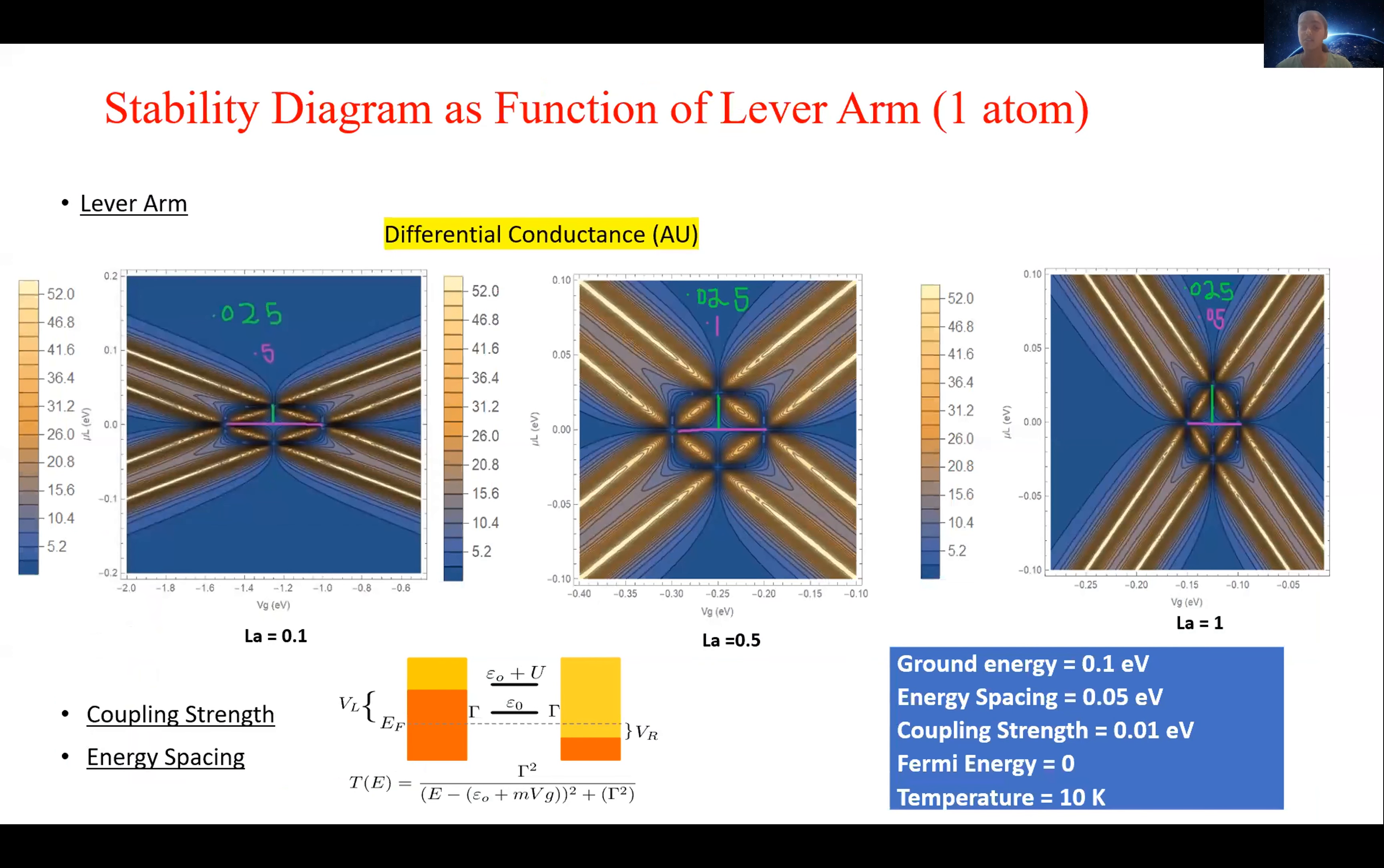So to investigate the one atom system, we observe this differential conductance profile as a function of the two potentials, and see how it changes as we change different parameters, such as the lever arm. The lever arm can magnify the effect of the gate voltage in increasing energy levels of the electrons within the atom, the coupling strength, and the energy spacing.